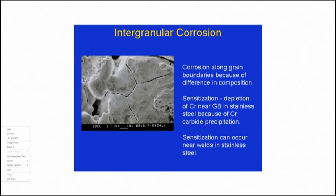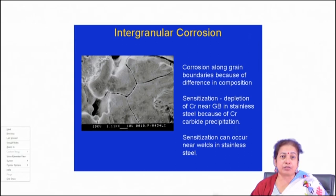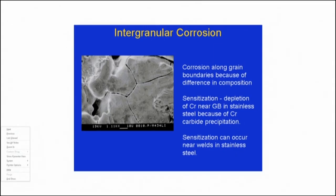Even if we refine the structure, the corrosion rate of the refined structure is not really so high compared to the annealed structure. But if we move in the nanometer direction, we find that the corrosion rate of nanostructured materials is even lower than that of annealed coarse-grained microstructure. This is because, though initial kinetics is higher, a very thin and highly adherent protective film forms, which is much stronger in nanostructured materials.